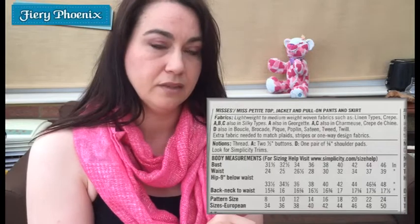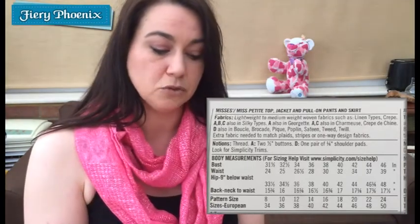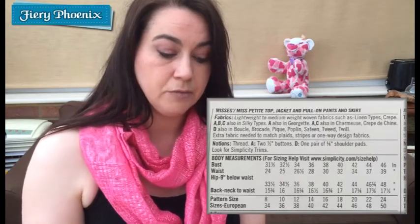Working through the information, you start with the pattern number — in this case K1467 — and it tells you how many pieces the pattern contains. Whilst you've got the four main pattern pieces (the shirt, trousers, skirt, and jacket), there are obviously various elements such as sleeves, waistbands, front backs, and legs that comprise those garments. There are 24 pieces within this pattern selection. It then describes the patterns within the packet — Mrs. or Miss Petite top, jacket, pull-on pants, and skirt — and moves on to talk about fabrics, in this case lightweight to medium weight woven fabrics such as linen or crepe.